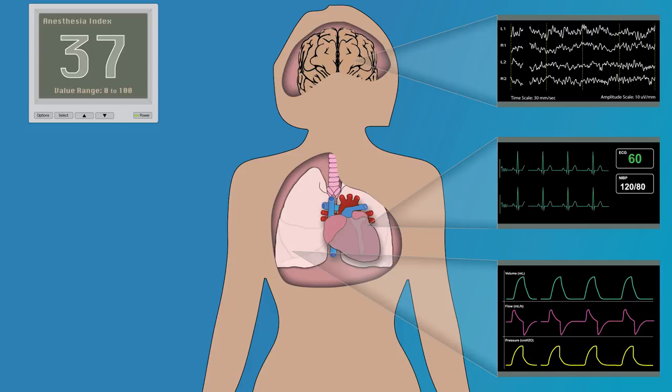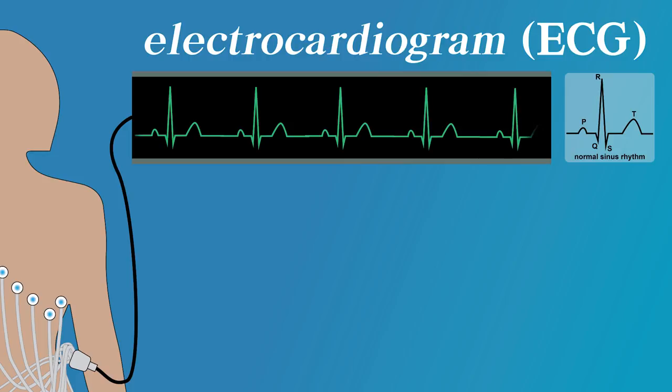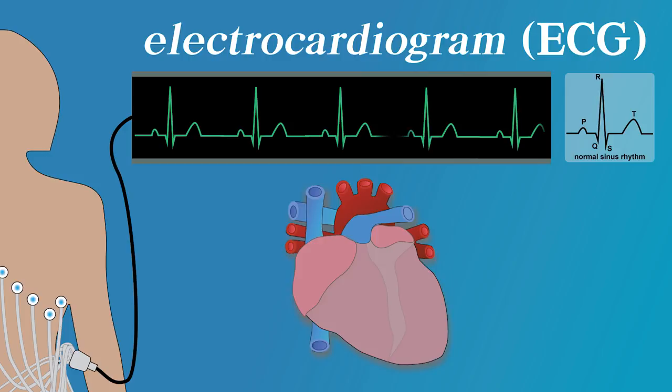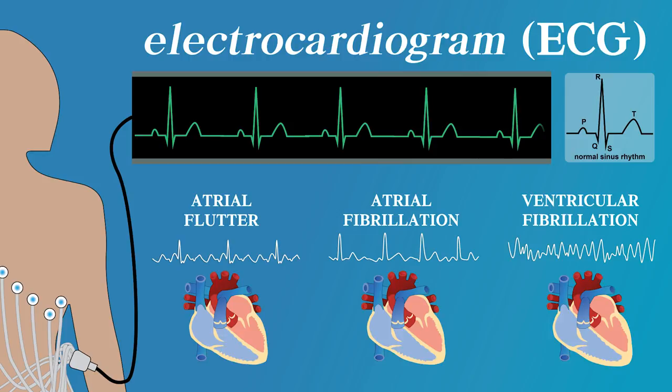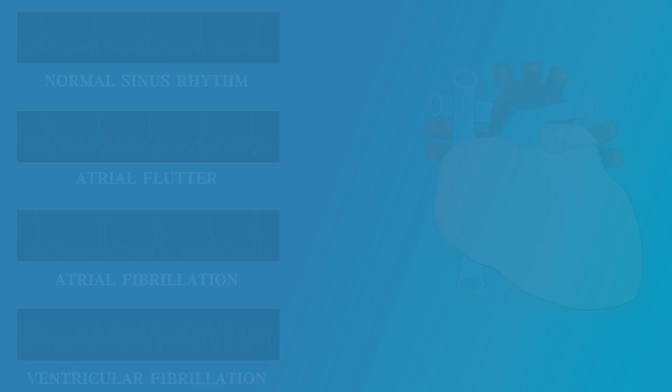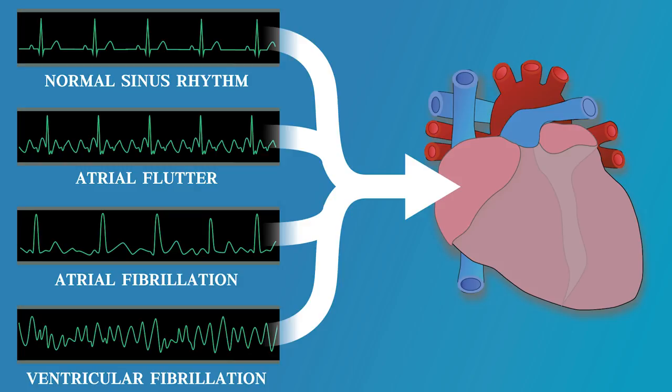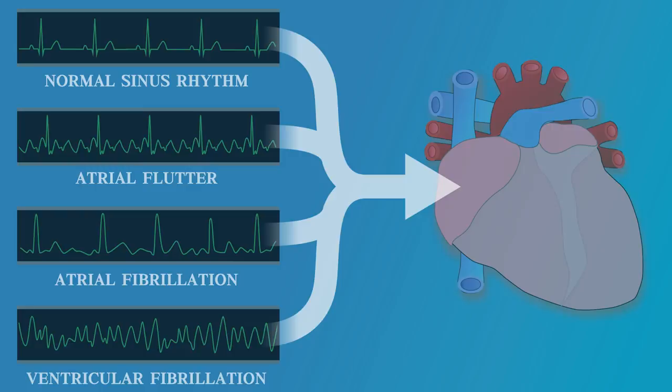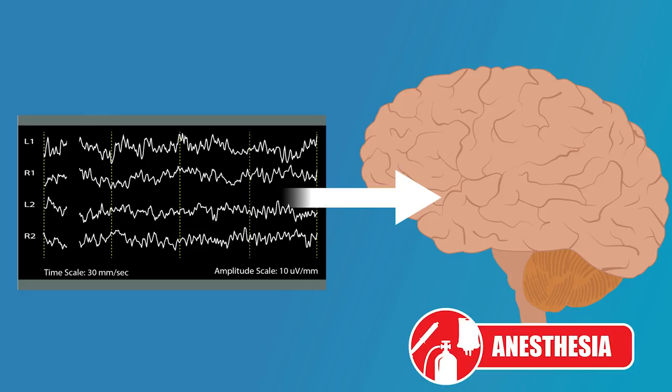Consider the electrocardiogram. Clinicians use this waveform all the time. With proper training, we can understand the morphology associated with the ECG waveform and how it relates back to the underlying physiology of the heart. We know that specific ECG waveforms indicate aberrations in how particular areas of the heart are performing. The ECG signal shows us real-time information about the heart's current state, allowing us to precisely intervene if necessary. Why not use the EEG signal in a similar manner for anesthesia monitoring?